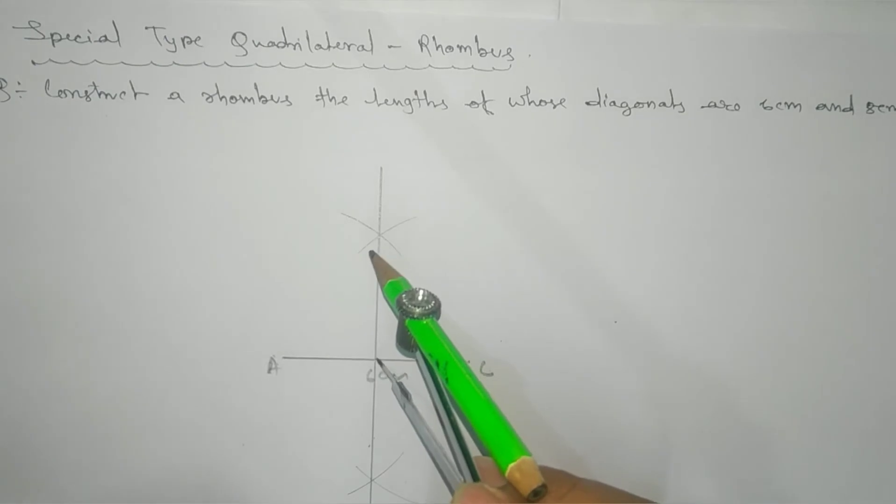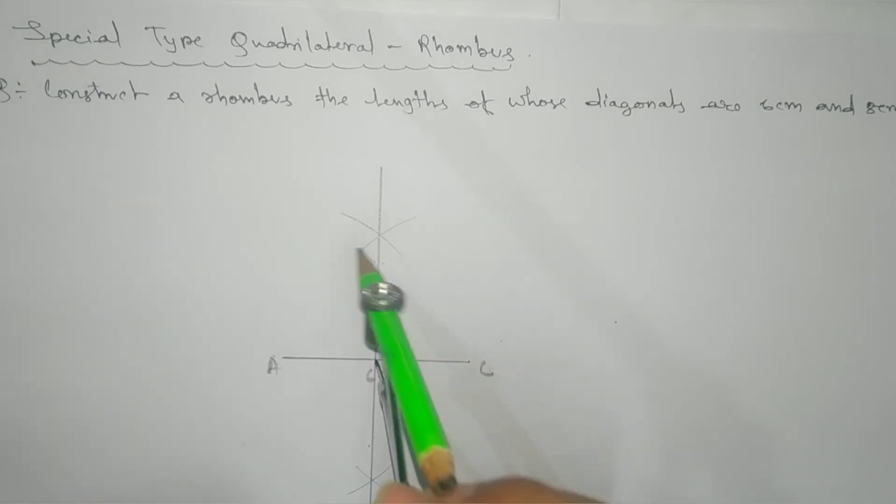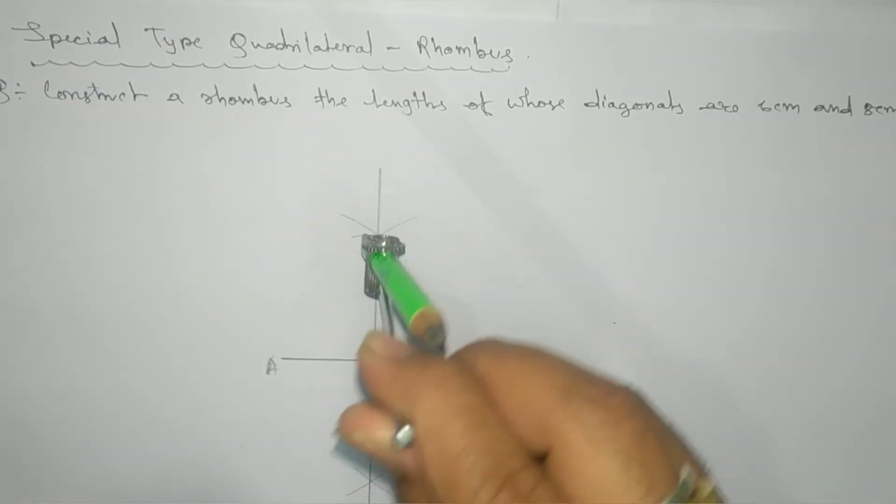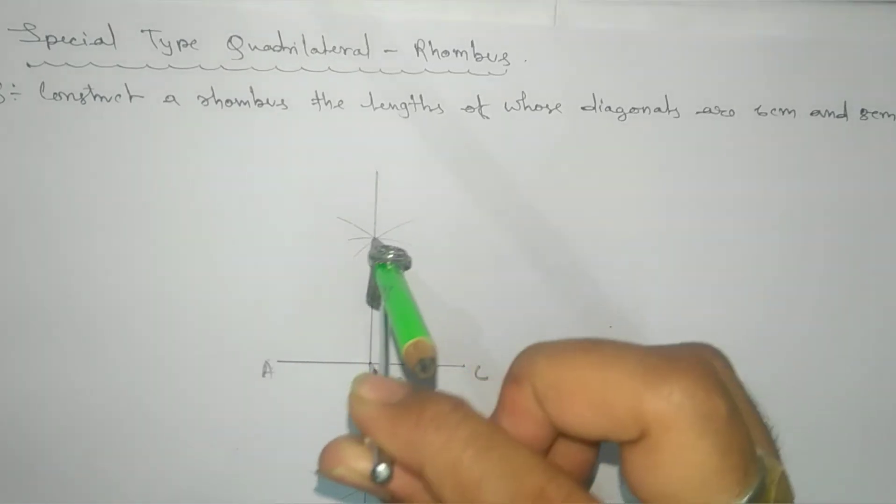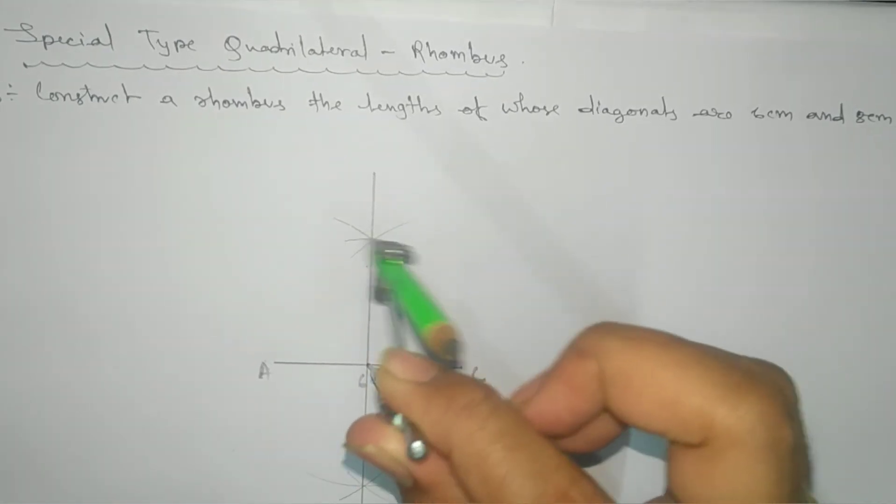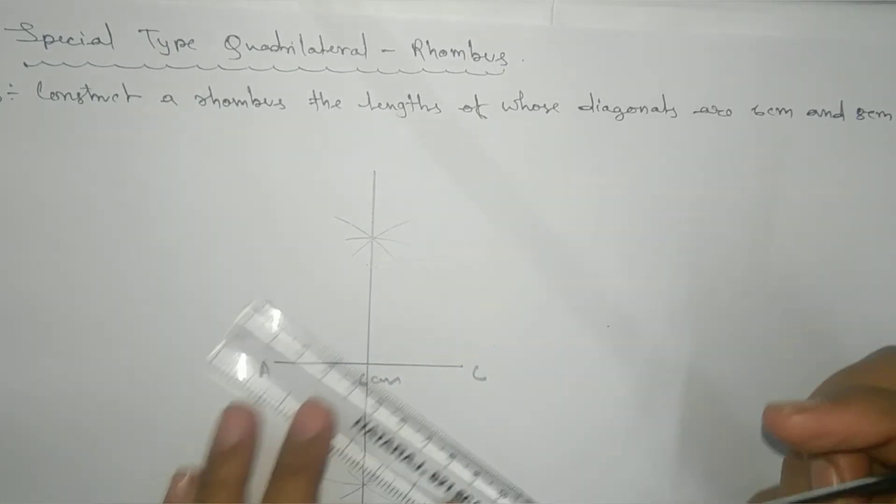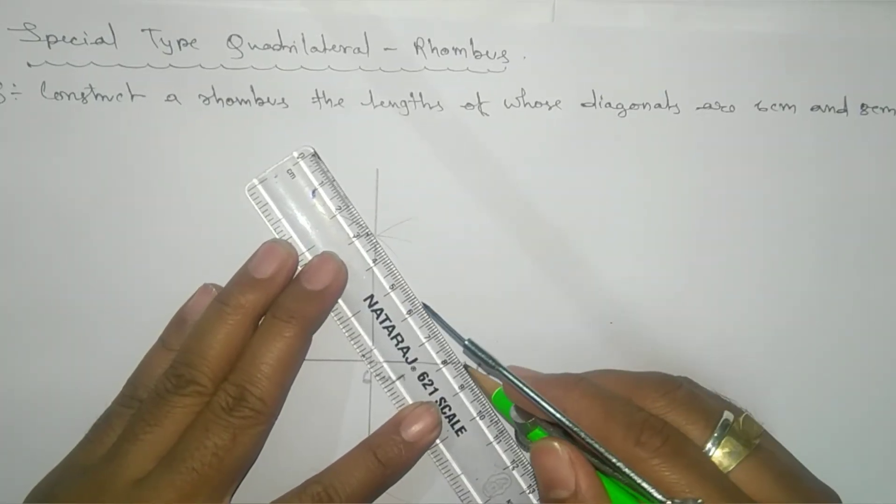Now from the center of AC we'll cut here. Coincidentally it matches, no problem. It's not necessary that it will match here. Now you join it. If you join it here, the required quadrilateral will be your rhombus.